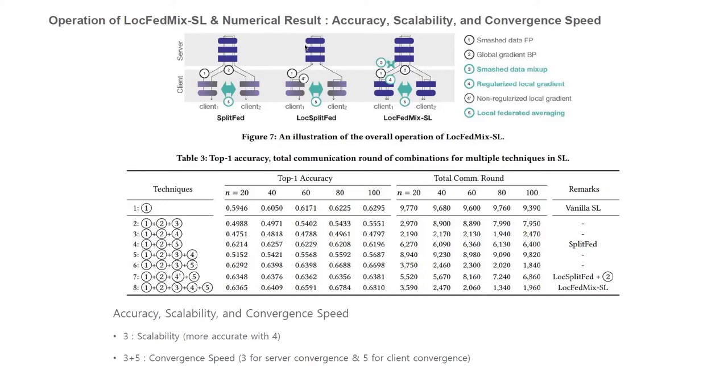As previously mentioned, it is known that the accuracy gain tends to increase as the data mixer is performed in the layer closer to the input layer. As we expected, local regularization is operated to show effects similar to making the SMASH data mixer closer to the input layer. In this context, simultaneous utilization of SMASH data mixer and local regularizer leads to greater accuracy gain.